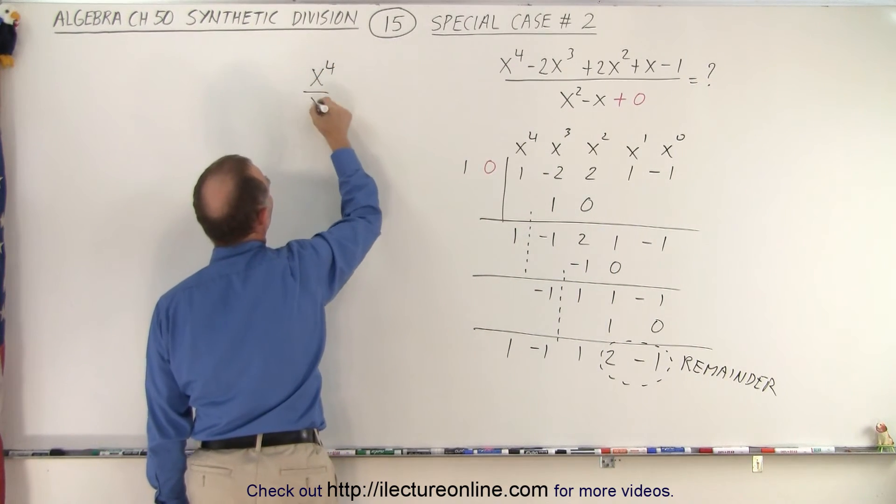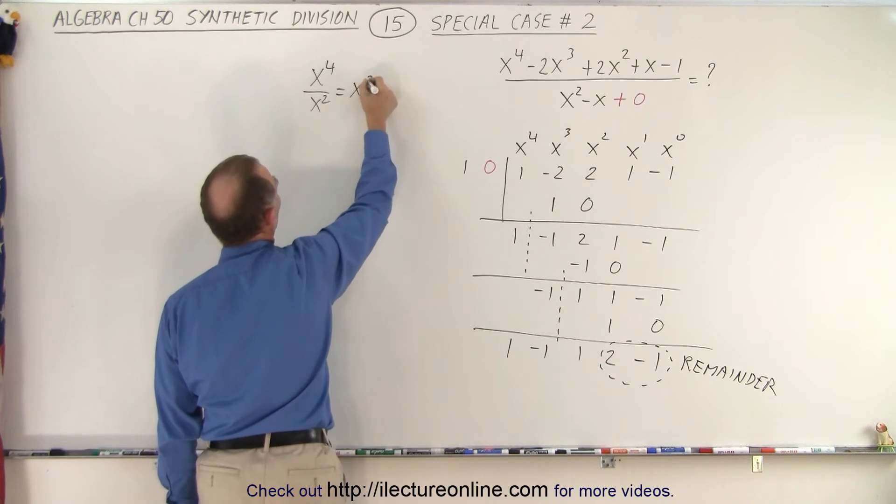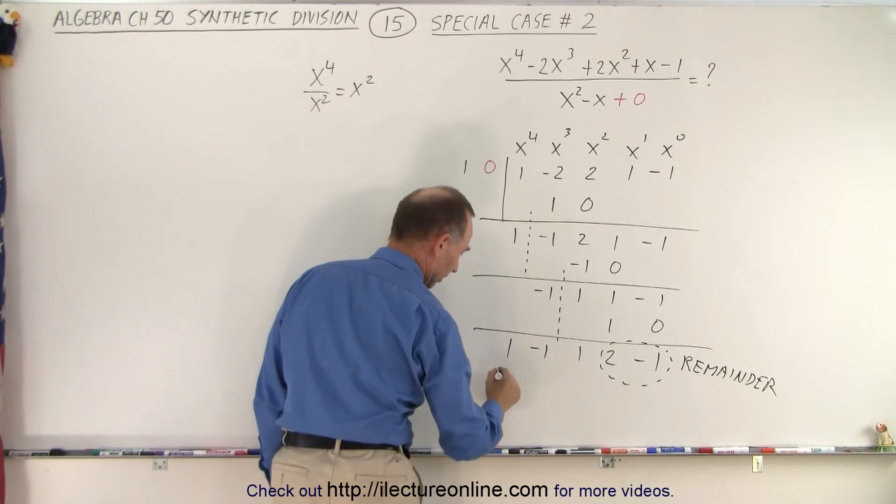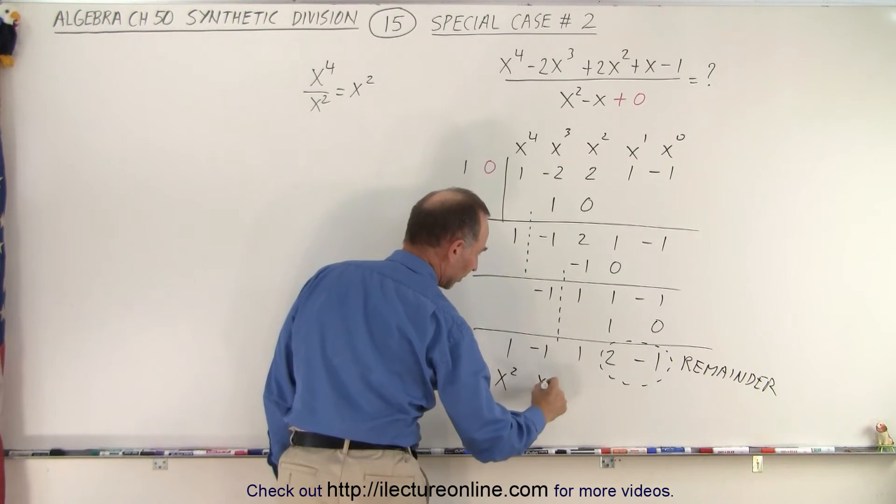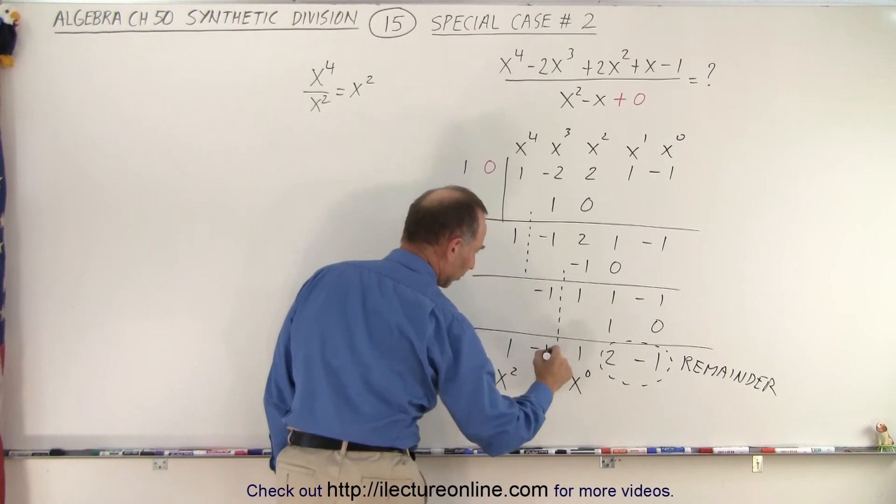So x to the 4th power divided by x squared gives me an x squared. That means the first term here is an x squared, this is an x, and this is an x to the 0 power, x to the 1st power.